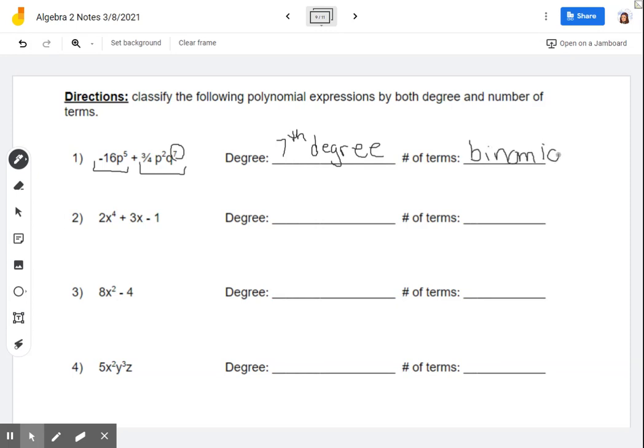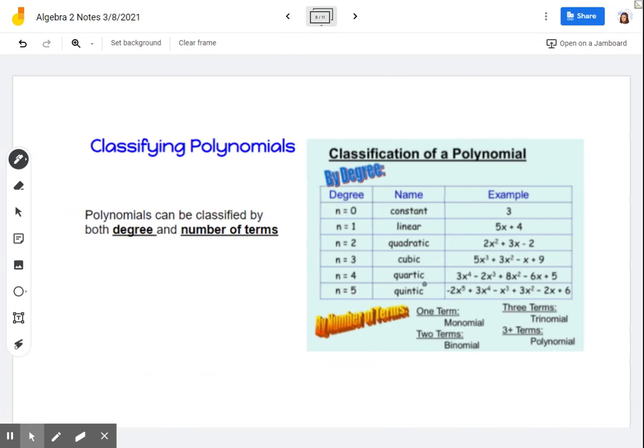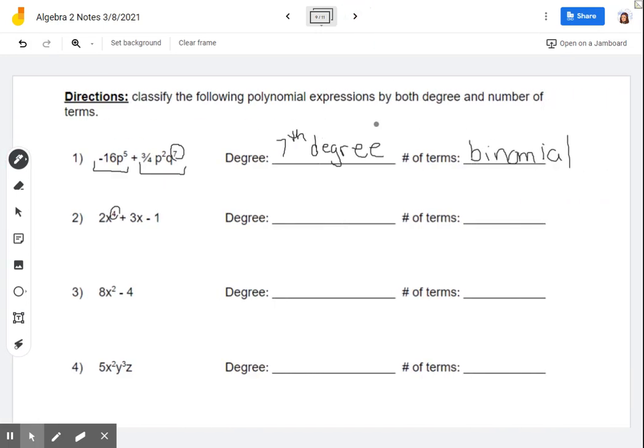If you want to pause the video now and try to see if you can answer the rest of these, go ahead. And then you can hit play again when you're ready to check your answers. For our next example here, our highest degree is a four. So four, if we turn back, is going to be quartic. So our degree is quartic.